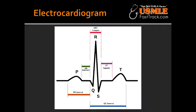In an ECG, what does the P wave stand for? The P wave is atrial depolarization. When does atrial repolarization happen? Atrial repolarization is masked by the QRS complex. What is the PR interval? The PR interval is the conduction delay through the AV node. The normal conduction delay through the AV node is less than 200 milliseconds.